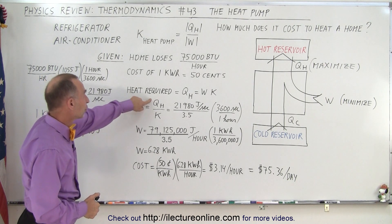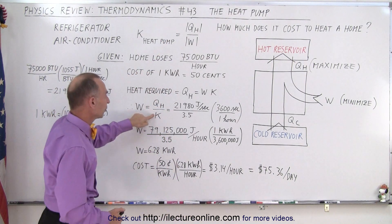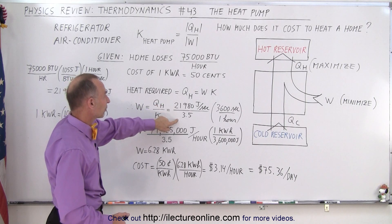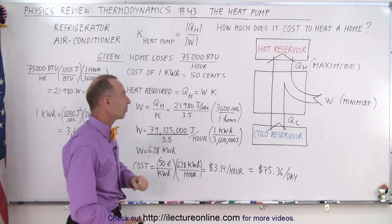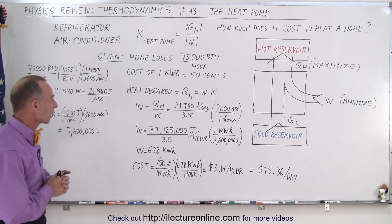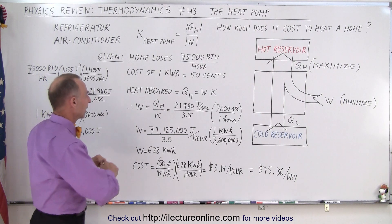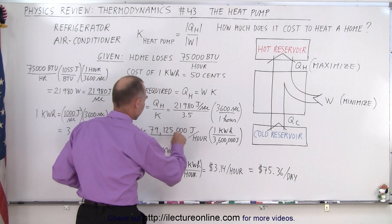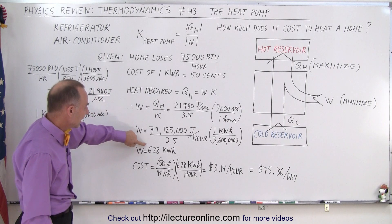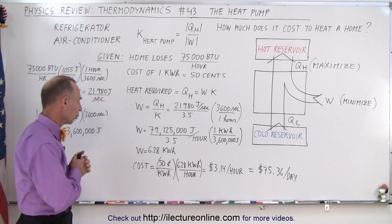So the work required is Q_hot divided by K. Q_hot is the heat we need, and K is the coefficient of performance. So we need 22,000 joules per second, and the coefficient of performance is 3.5. Then we multiply by 3,600 seconds per hour, because we want to know how much heat we need per hour. Dividing by 3.5, we end up needing 6.28 kilowatt hours per hour to keep the house warm.